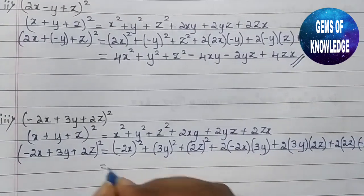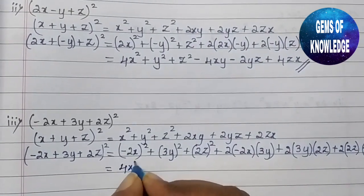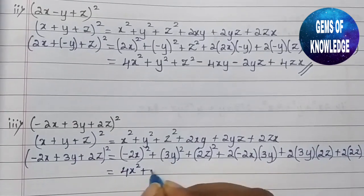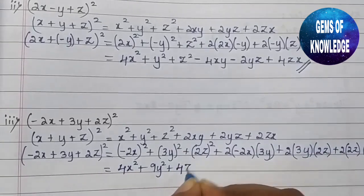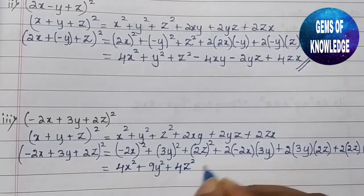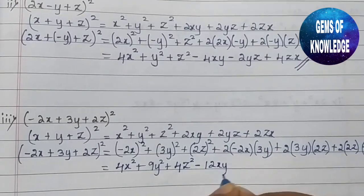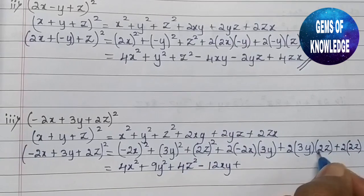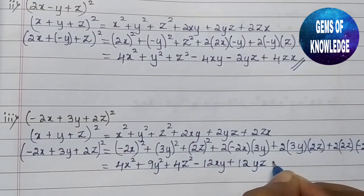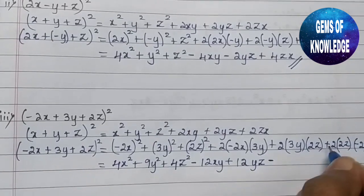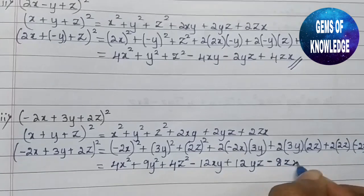Opening: (−2x)² = 4x², (3y)² = 9y², (2z)² = 4z². Then 2·(−2x)·3y = −12xy, 2·3y·2z = +12yz, and 2·2z·(−2x) = −8zx. So the result is 4x² + 9y² + 4z² − 12xy + 12yz − 8zx.